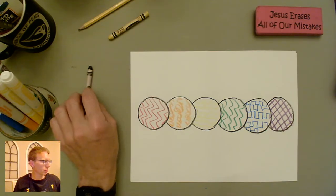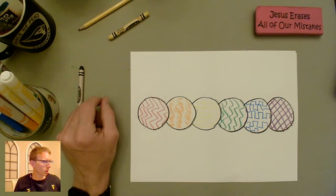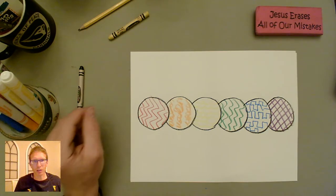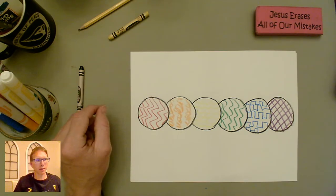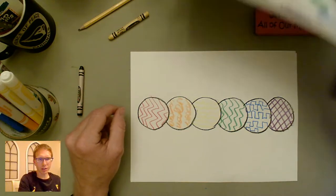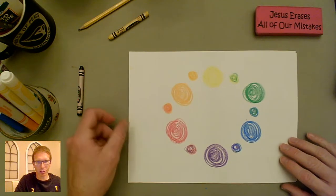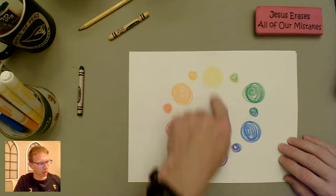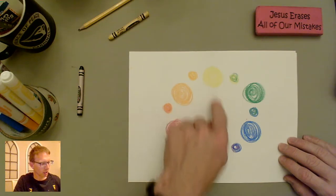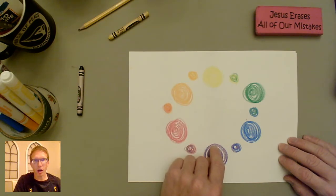And then what we're going to do is we're going to grab our markers and we're going to color these in using the idea of complementary colors. Looking back at our color wheel, we've got these colors that are opposite each other. Yellow and purple, those are called complementary colors.